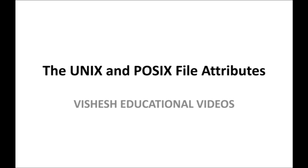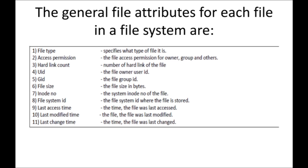So when you create a file, that file can contain different types of attributes. The first attribute is the file type. File type specifies what type of file it is. When you create a file, you may create a text file, you may create an image file. So based on the type of a file, this attribute value will be fixed.